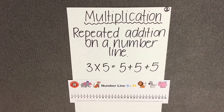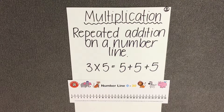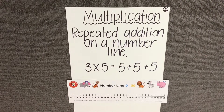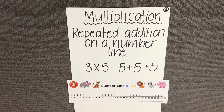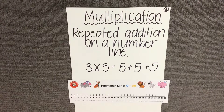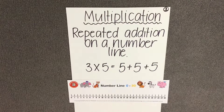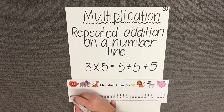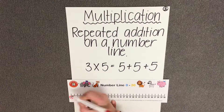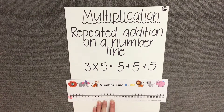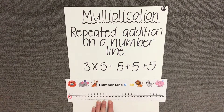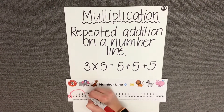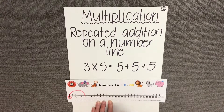Using the number line, we need to add 5 three times using skip counting to help us find our answer. We always start at 0, which we need to find on our number line. And then we do our first jump of 5, which takes us to the number 5.